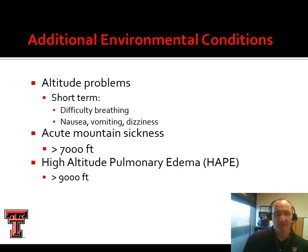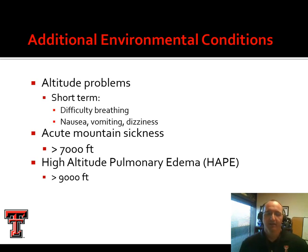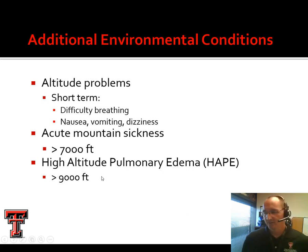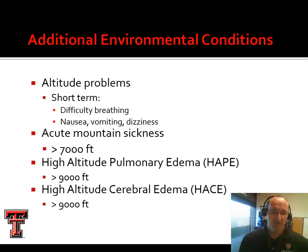Exercise at altitude has contrasting short- and long-term effects. Short term, it is a problem — athletes may experience difficulty breathing, nausea, vomiting, and dizziness, which impairs performance. Long term, however, athletes actually train at altitude intentionally to gain adaptations, because the relative percent oxygen in the air is lower at altitude and the body adapts over time. Acute mountain sickness occurs above 7,000 feet; above 9,000 feet there is risk of pulmonary or cerebral edema — serious conditions where fluid accumulates on the lungs or brain, more commonly seen in mountain climbers than athletes.